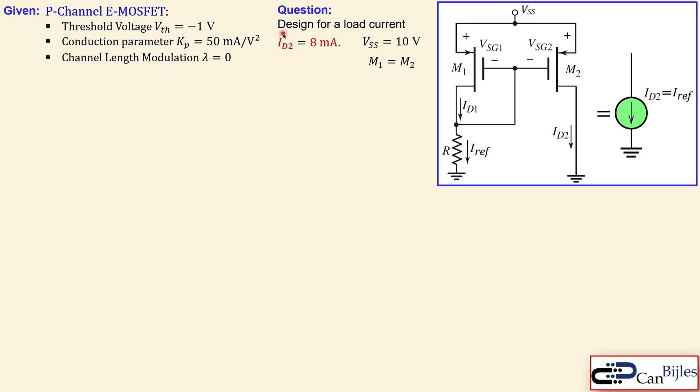What we want is a design for a load current ID2 of eight milliamps. This is a similar problem and analysis as in example number one, but now we use P-channel MOSFETs.